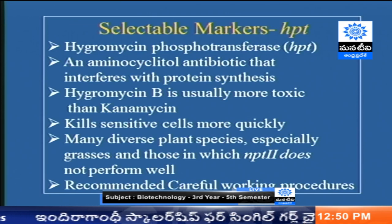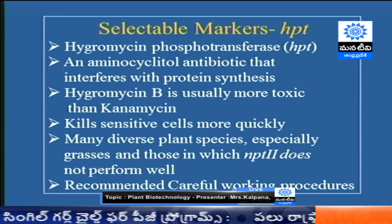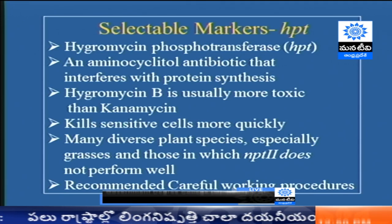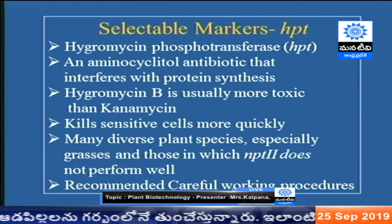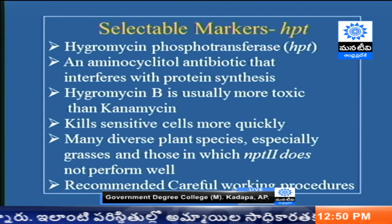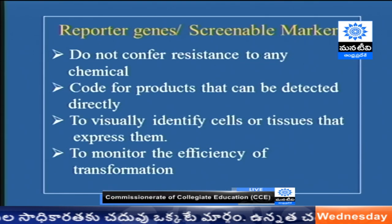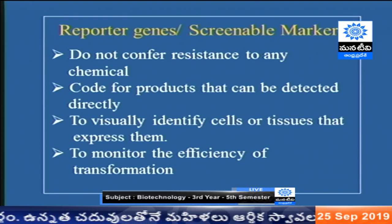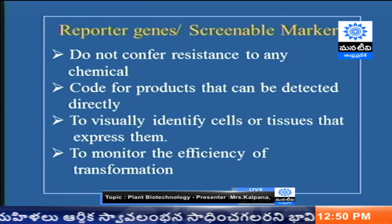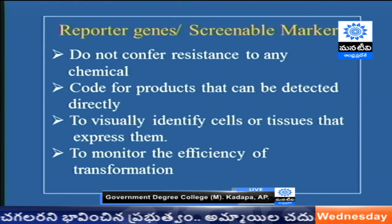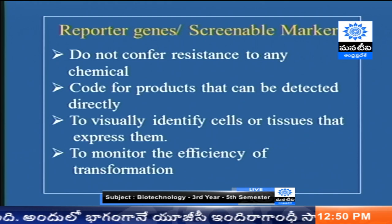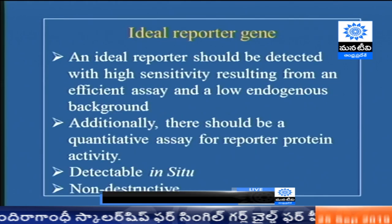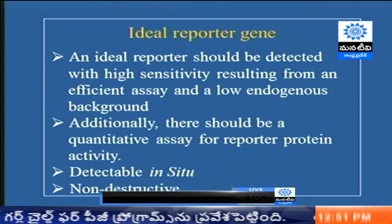The other selectable marker gene is HPT — hygromycin phosphotransferase gene. The main advantage is that where NPT2 does not work for legumes and graminaceous plants, HPT works better. However, hygromycin is somewhat more harmful to humans compared to kanamycin, so careful working procedures are required when working with HPT. Then we go for reporter genes, where they do not confer resistance to any chemical agent, but the products of the gene — the proteins — can be detected directly. The aim of reporter genes is to visually identify cells or tissues that express them and to monitor the efficiency of transformation. The ideal reporter gene should be detected with high sensitivity, have a low endogenous background, and have a quantitative assay for reporter protein activity. The reporter gene should be detectable in situ without damaging cells — a non-destructive method.